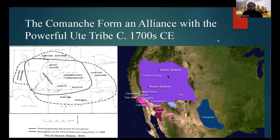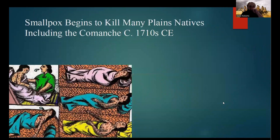It would also be during this time period — the 1690s and early 1700s — that the Comanche would form an alliance with the powerful Ute tribe, located in the Great Basin region of Colorado and Wyoming. It's also important to note that during this early contact with Europeans, smallpox would begin to kill many Plains natives, including the Comanche.